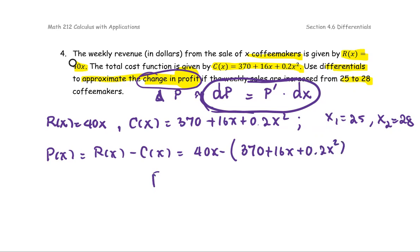We get the profit function as a simplified form. The mission is to distribute the negative sign to all of them. I'm going to write one more step, just in case we don't want to miss any sign.